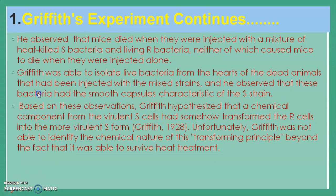Griffith was able to isolate live bacteria from the hearts of the dead mice that had been injected with the mixed strains. When he injected the mixture of heat-killed S bacteria and living R bacteria, he isolated living bacteria from the hearts of the dead animals. He observed that these bacteria had smooth capsules, characteristic of the S strain.